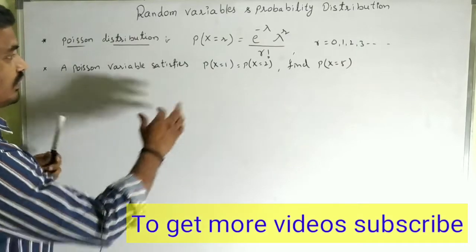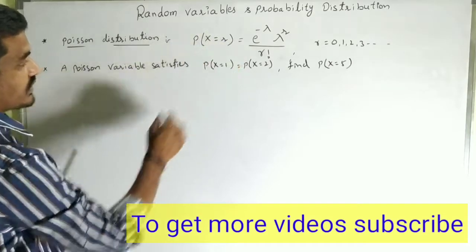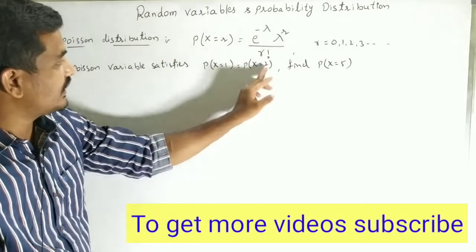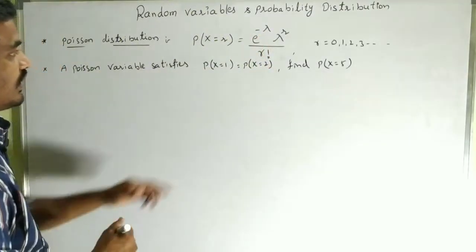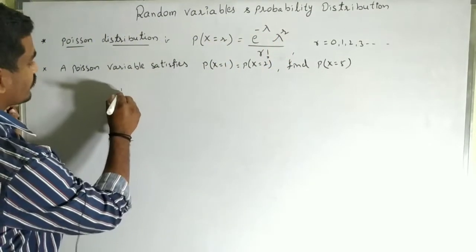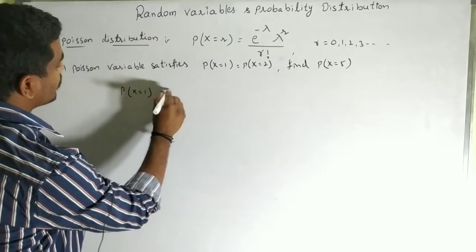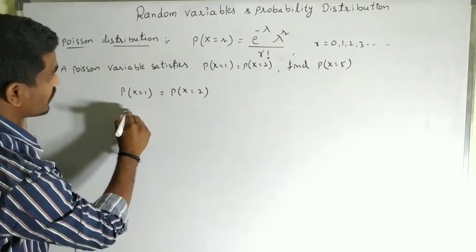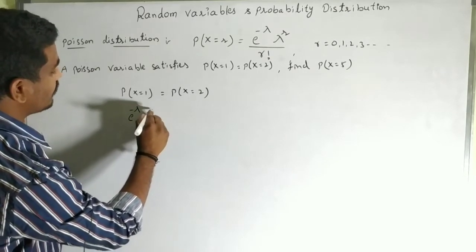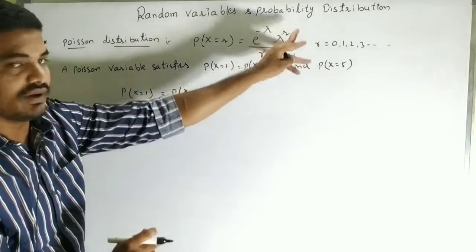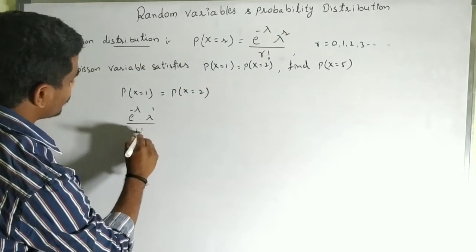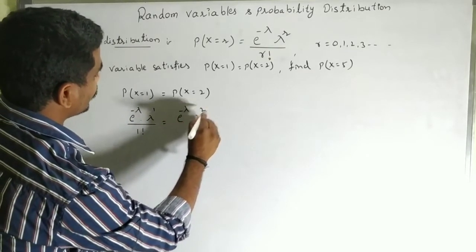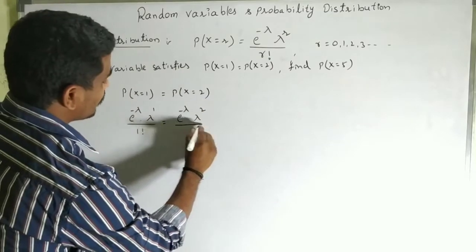First, we write P(X = 1) = P(X = 2) and substitute into the Poisson formula. For r = 1: e^(−λ) × λ^1 / 1! equals, for r = 2: e^(−λ) × λ^2 / 2!.